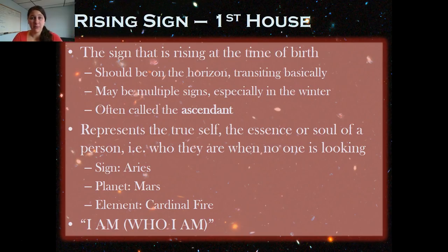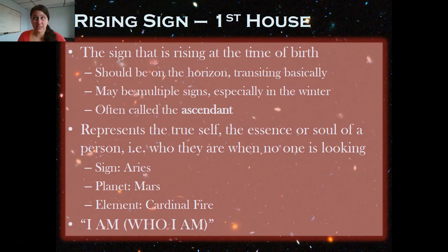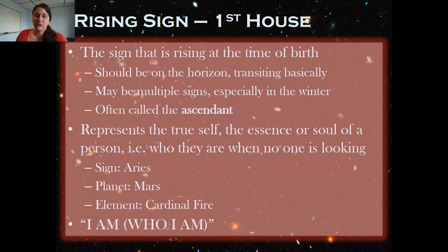It can sometimes be multiple signs, especially in winter when the ecliptic path is closer to the horizon, making it more common that two winter signs are rising at the same time. If someone has two rising signs, you split each house in half and every single sign is influenced by two houses, creating a very complicated chart. People with that in their chart tend to be very dynamic, hard-to-figure-out types. Some astrologers ignore this and say one sign is rising, but considering the cusp is really important.